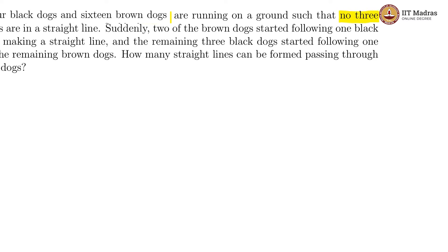So basically, no 3 of them are in a straight line. Any 2 of them will be on a straight line because a straight line is defined by 2 points. So any 2 dogs will be on a straight line, but they are saying no 3 are collinear together.